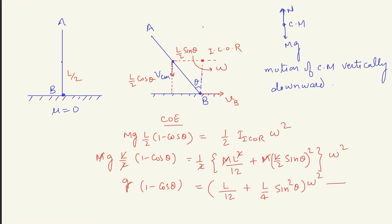Now if you want to calculate the velocity of center of mass: the distance of center of mass from the ICOR is L/2 sin theta, so velocity of center of mass equals (L/2 sin theta) × omega. Similarly, if asked for velocity of B, the perpendicular distance from ICOR to B is L/2 cos theta, so velocity of B = (L/2 cos theta) × omega.